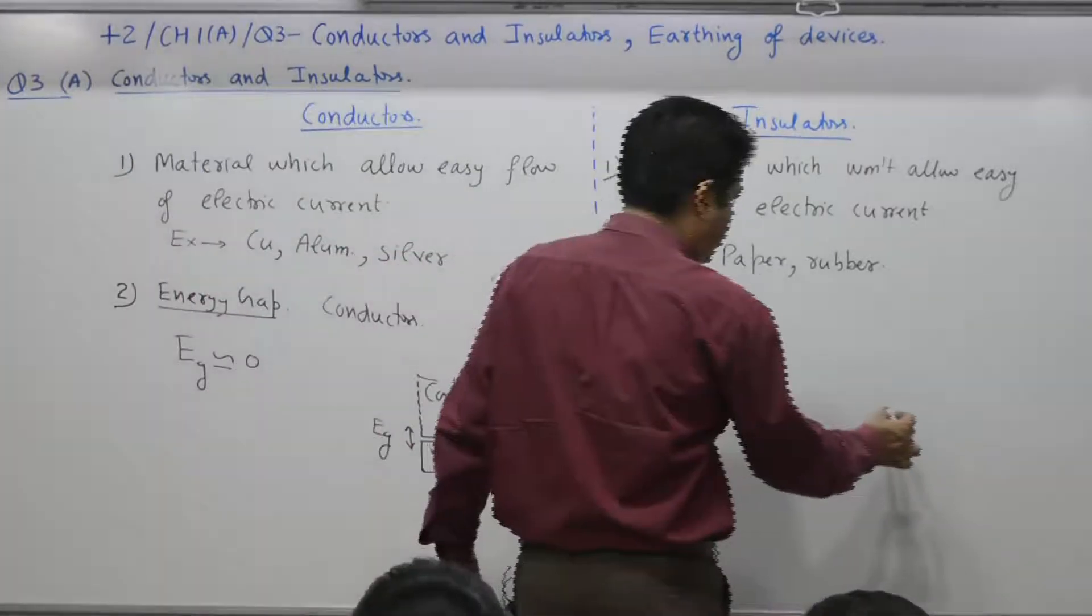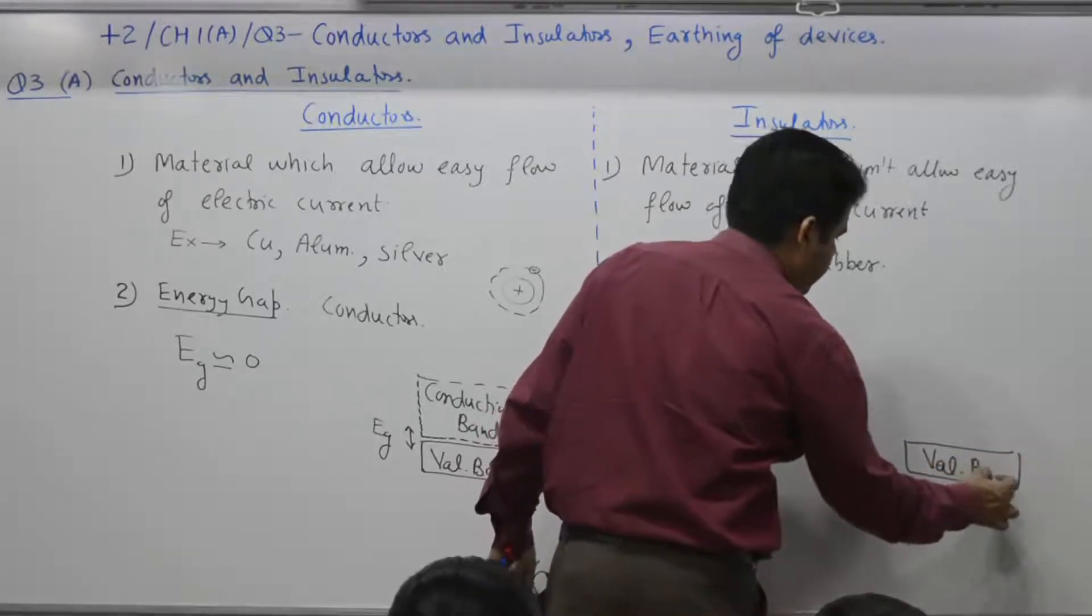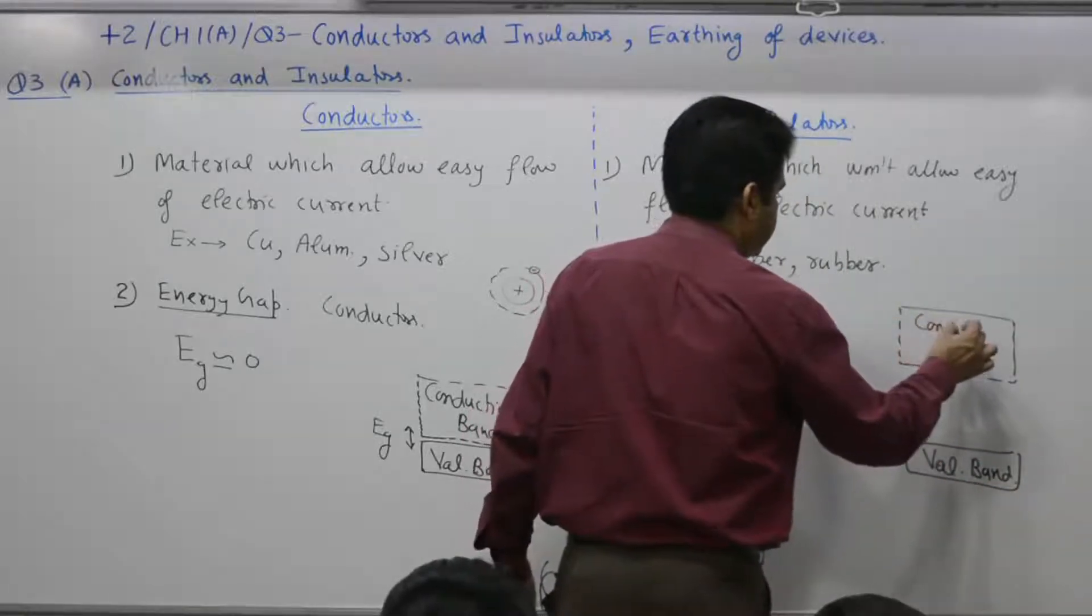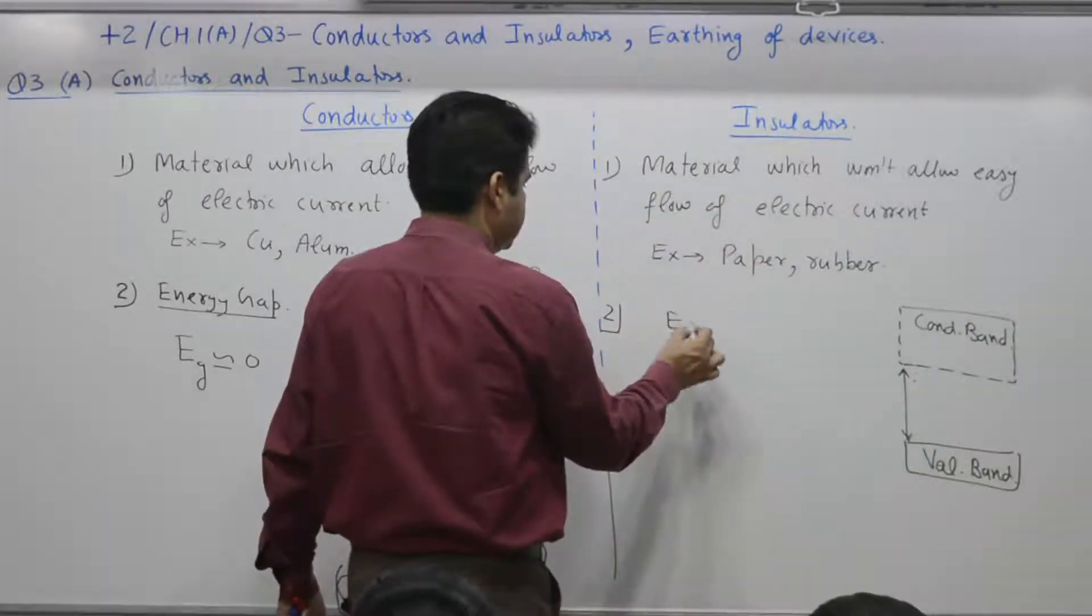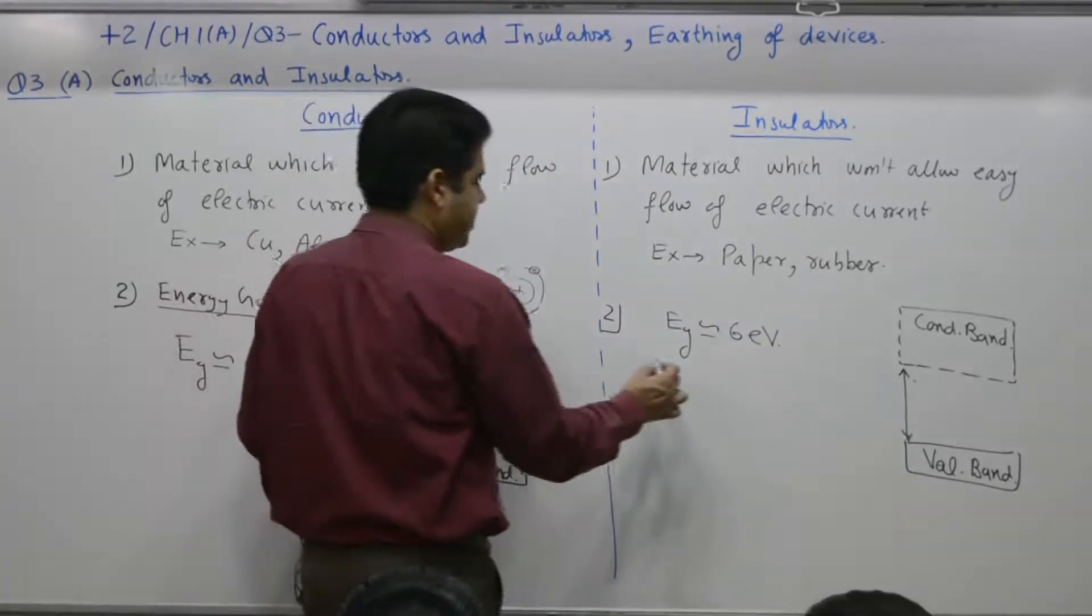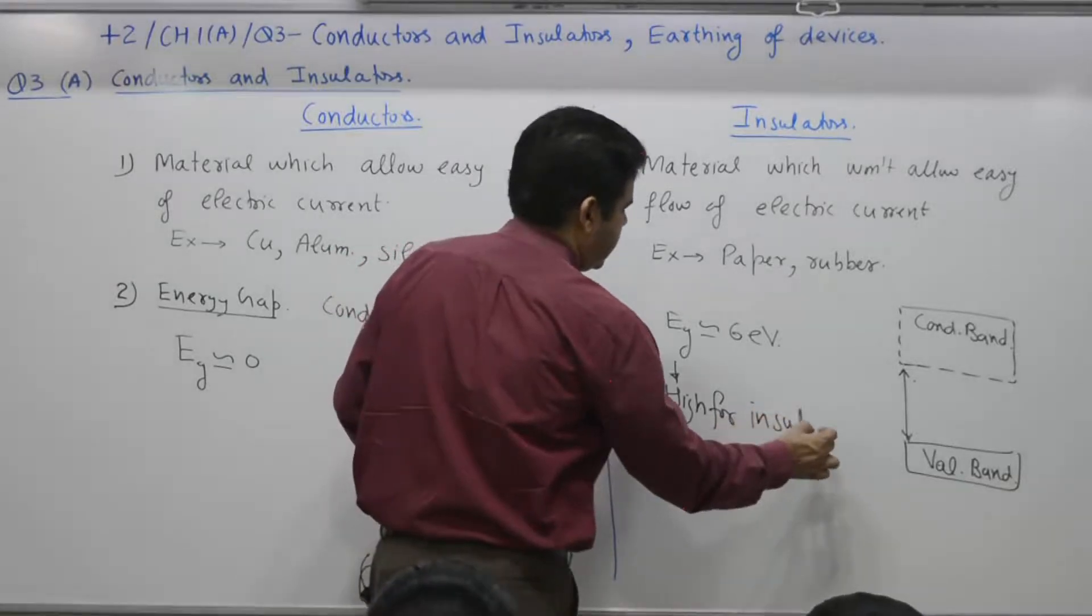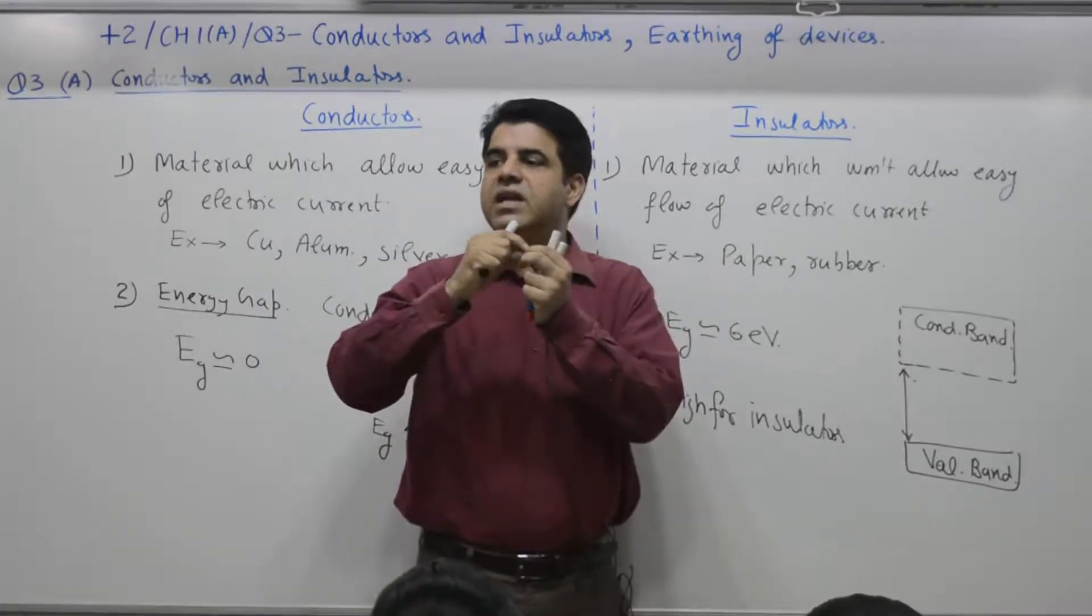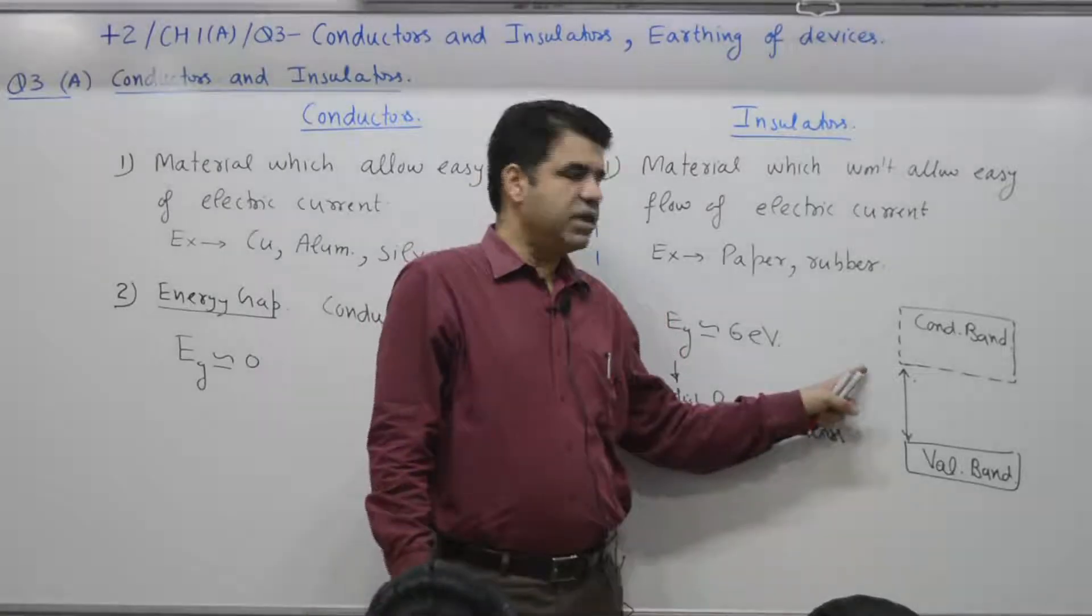Same diagram for insulators. For insulators, the gap between valence band and conduction band is too high, of the order of six electron volts. Energy gap is high for insulators. This means it's difficult to detach one electron and make it free so it can move anywhere.